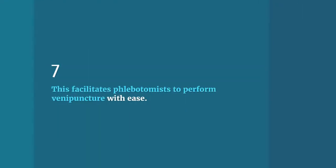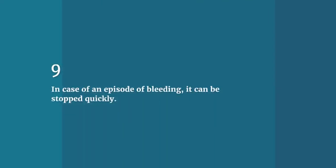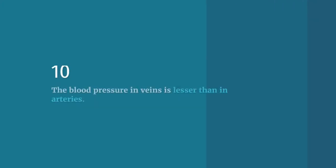Eight: there is less likelihood of contamination with tissue fluids. Nine: in case of an episode of bleeding, it can be stopped quickly. Ten: the blood pressure in veins is lesser than in arteries.